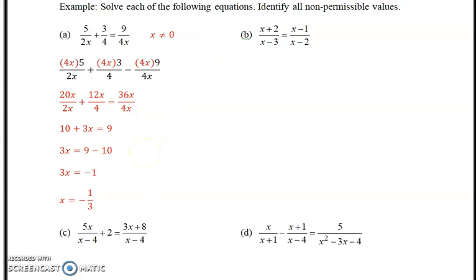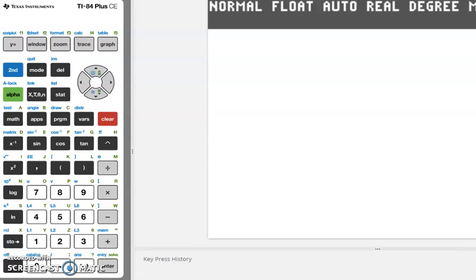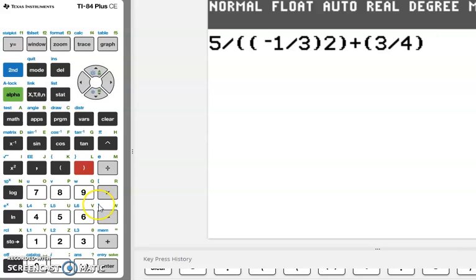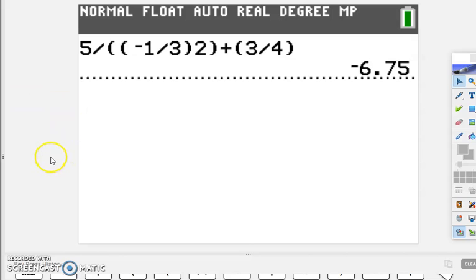We state our non-permissible value here. You can check this if you wish. I'll put it in the calculator. So it's 5 divided by (negative 1/3) times 2, plus 3/4. That equals negative 6.75.